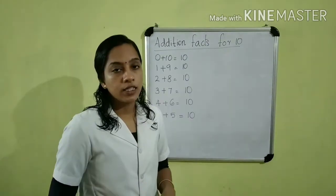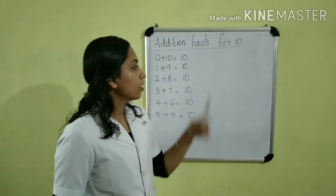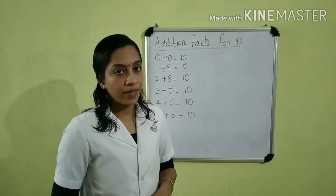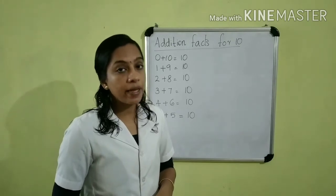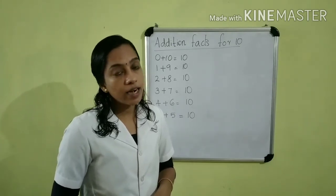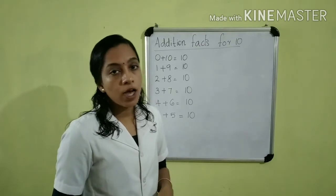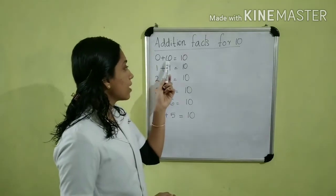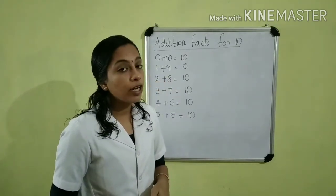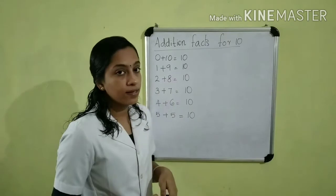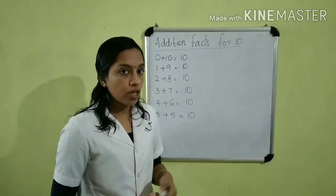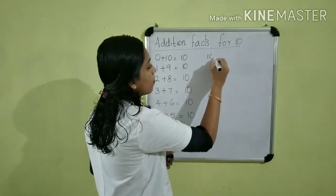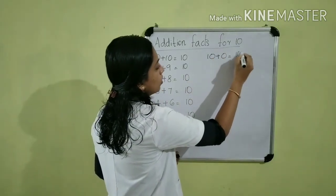Is it clear? Now we get these addition sums for 10. We know the addition property: 2 numbers can be added in any order and the answer remains the same. So let us change the order of these numbers. 0 plus 10 is equal to 10. How do you change the order? That is, 10 plus 0. 10 plus 0 is also equal to 10.